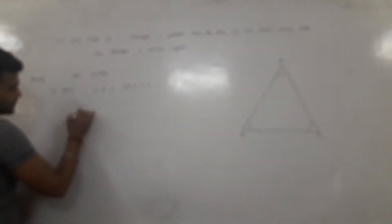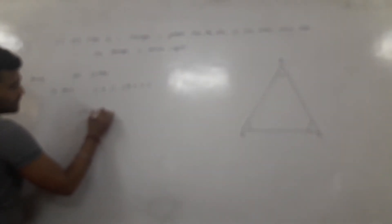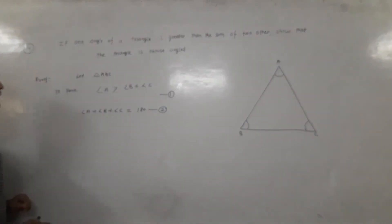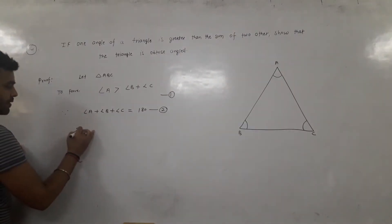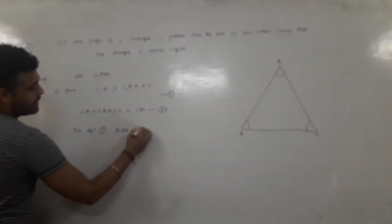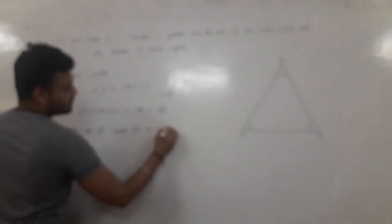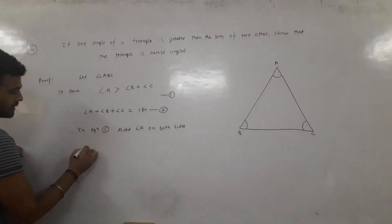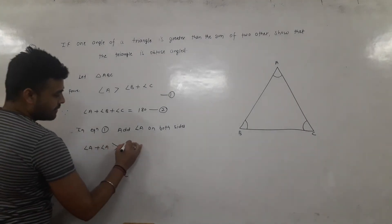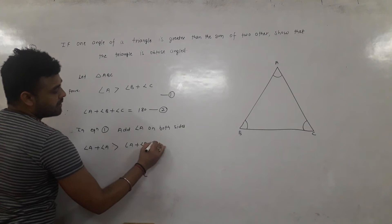We know that all angles of a triangle sum to 180°. So, angle A plus angle B plus angle C is equal to 180°. Since angle A is greater than angle B plus angle C, we have angle A plus angle A is greater than angle A plus angle B plus angle C.